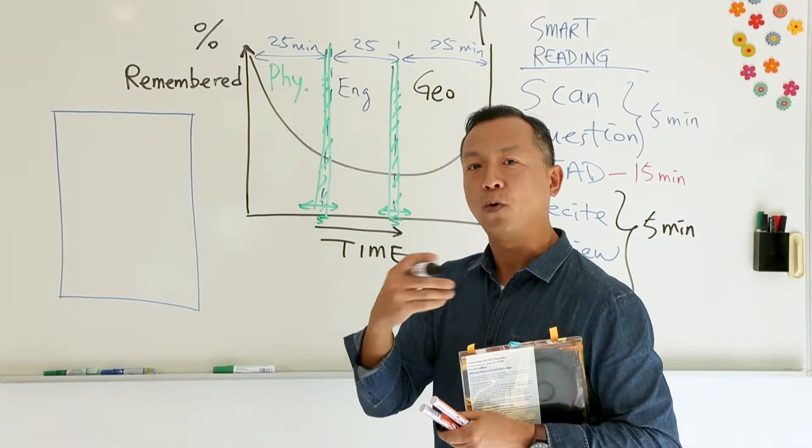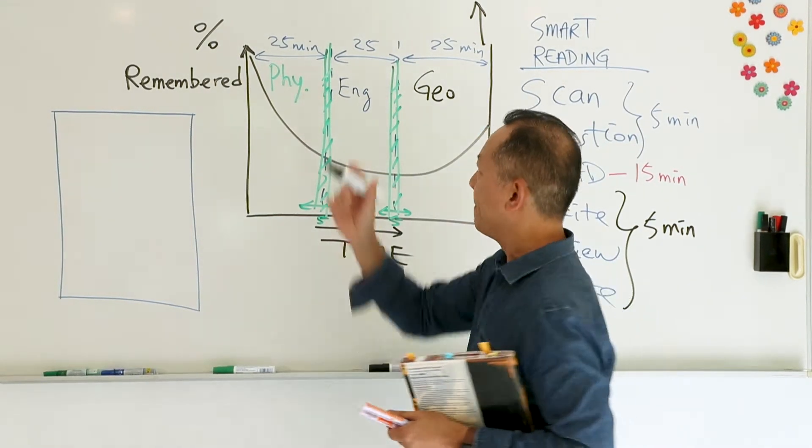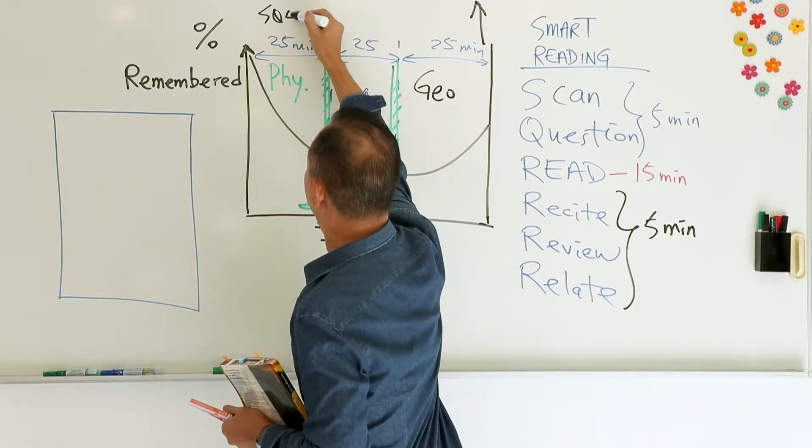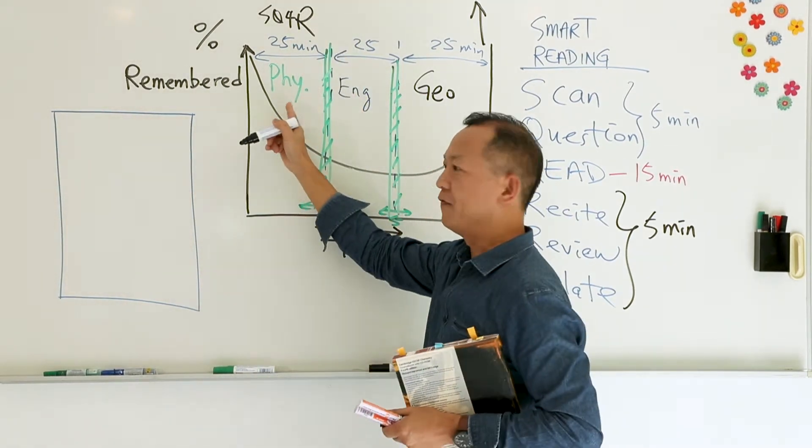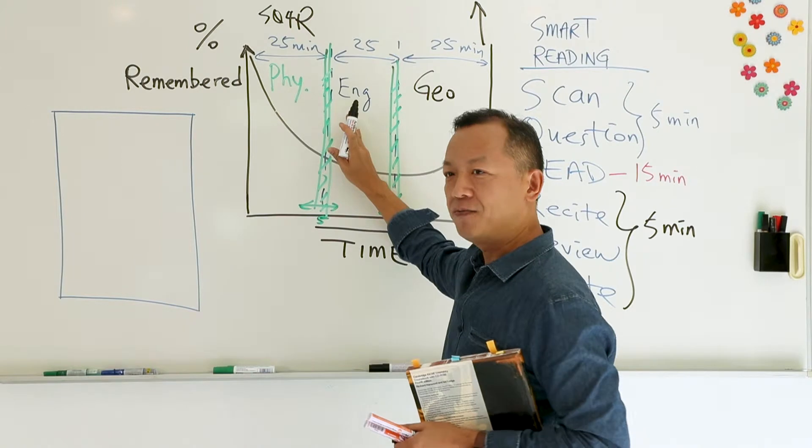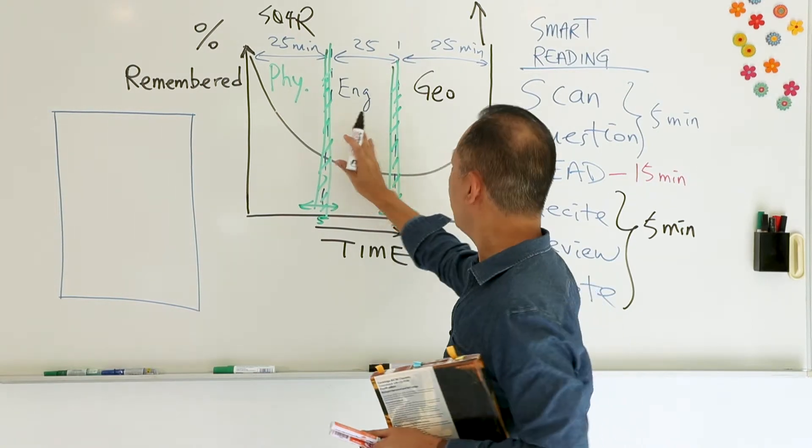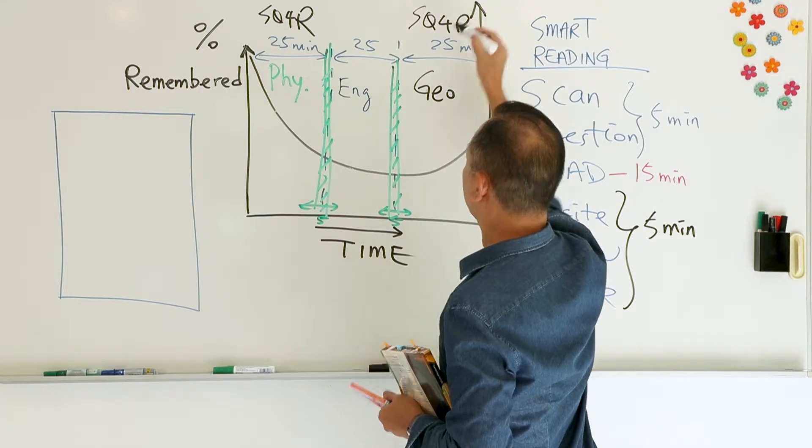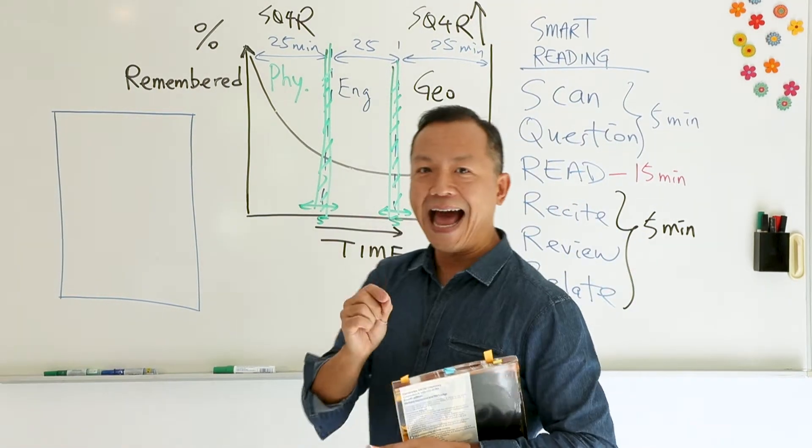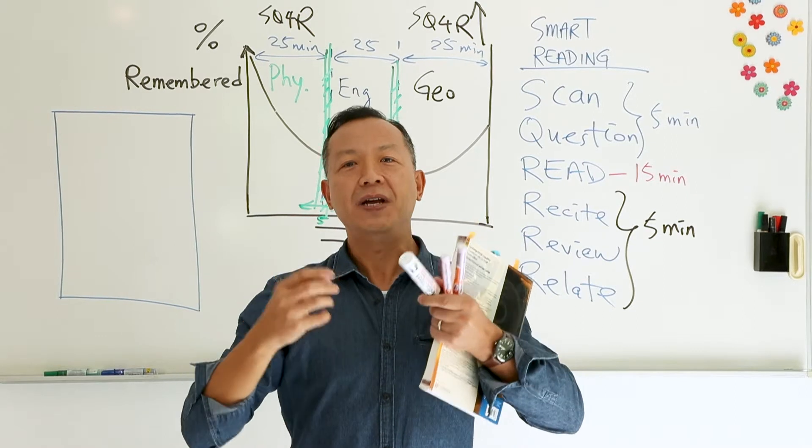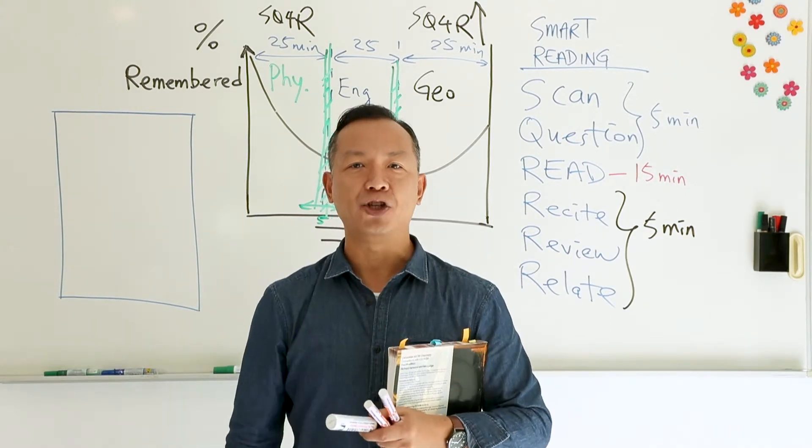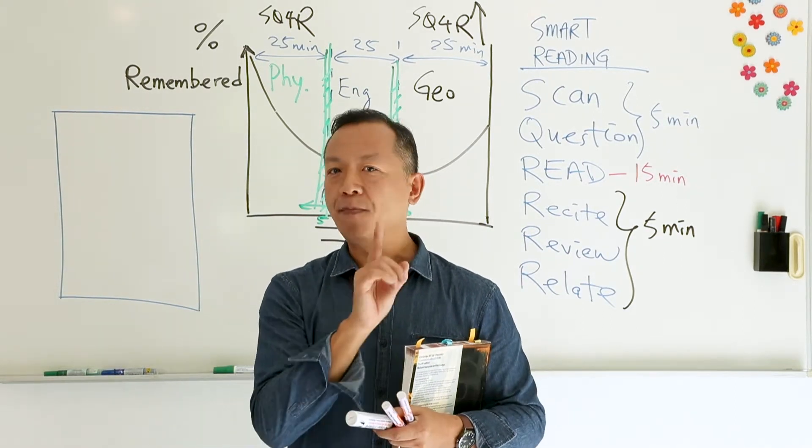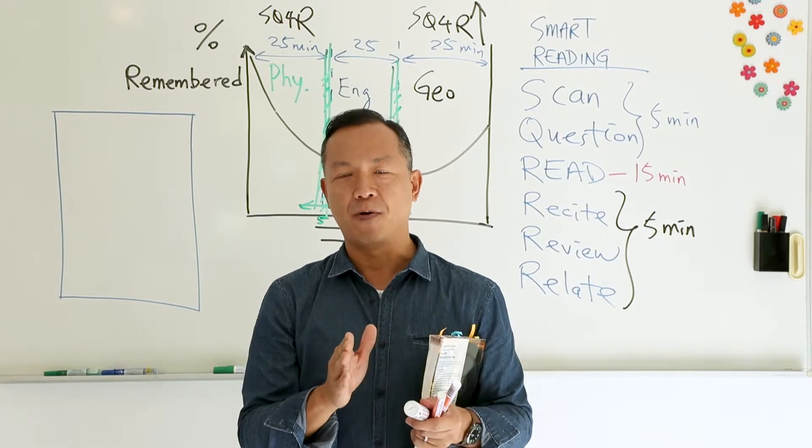That means if you are doing what we call academic reading, you do one SQ4R for physics. English, maybe it doesn't apply. For geography, you do another SQ4R. That is how you can maximize, really maximize the return on energy, on time. And one more piece of information - very important.